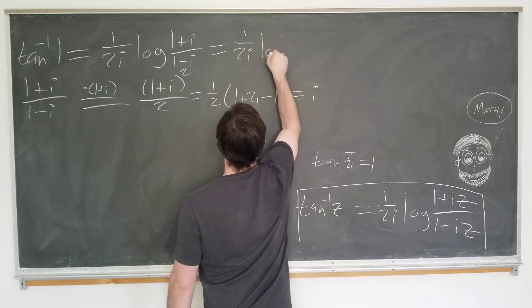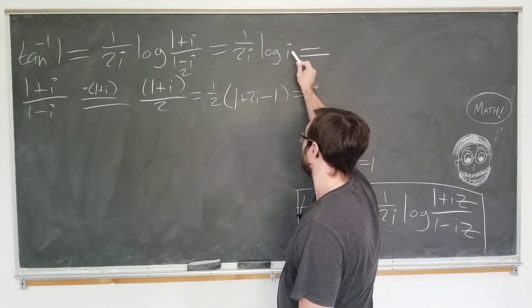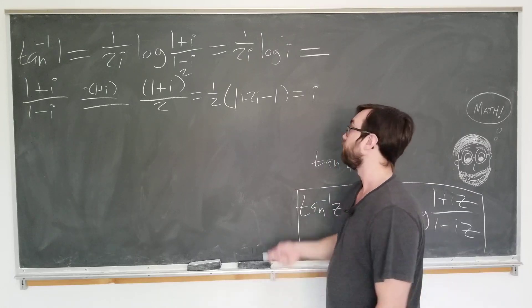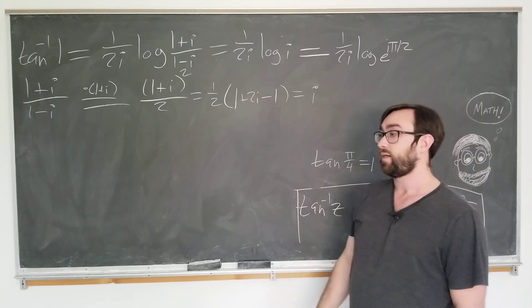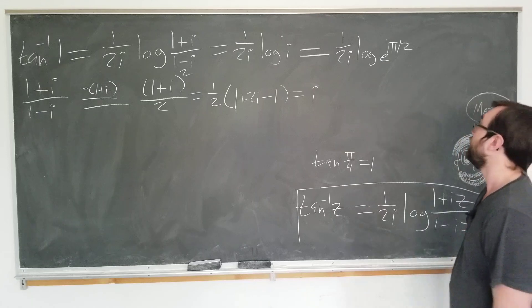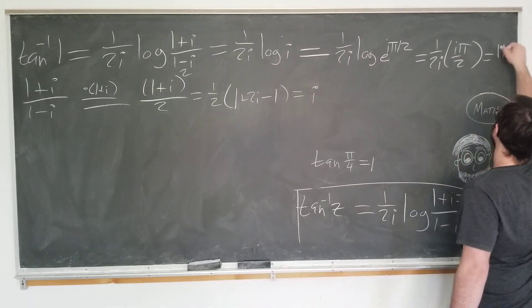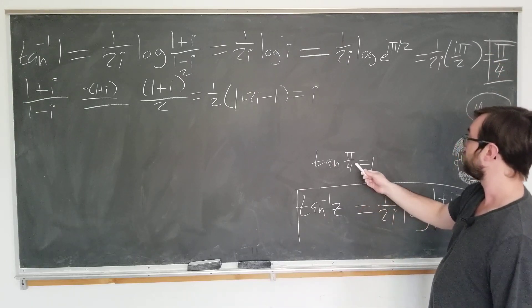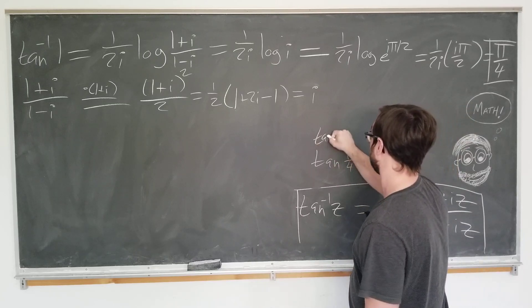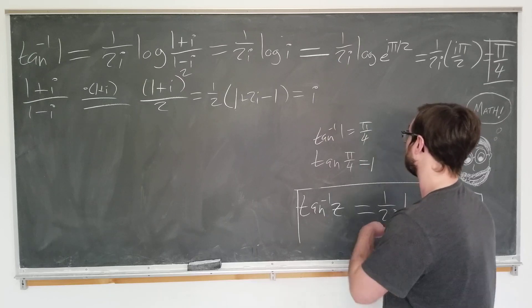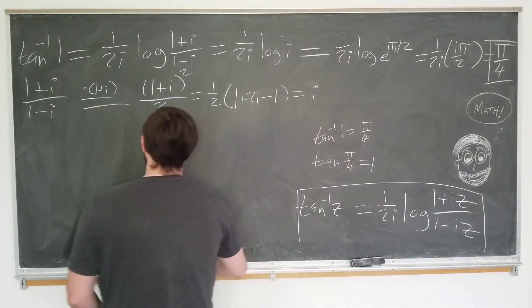So it's just 1 over 2i natural log of i. This is the trick to evaluating these logarithms. We want to write the complex number in polar form, which is particularly easy for i. 1 over 2i log of e to the i pi over 2, at least one value. The arctangent is multi-valued. We're choosing the principal branch here. Log e of i pi over 2 is just 1 over 2i, i pi over 2, which is pi over 4, as we hoped. We have indeed showed that it holds for at least one value. You can check other values perhaps by computer. We're going to do one other value as well.